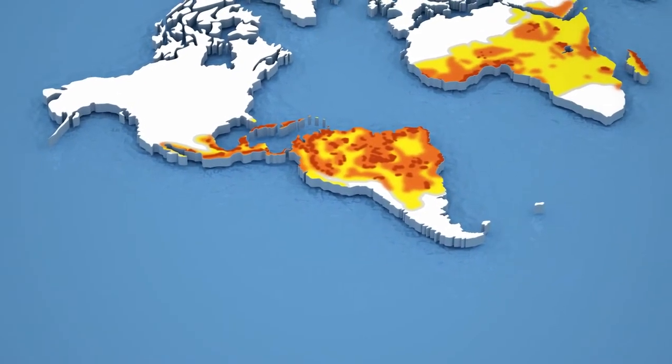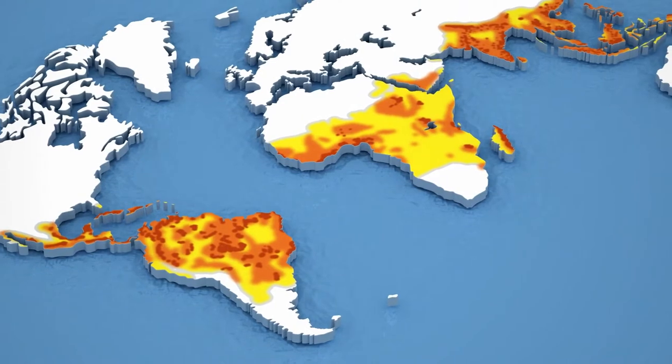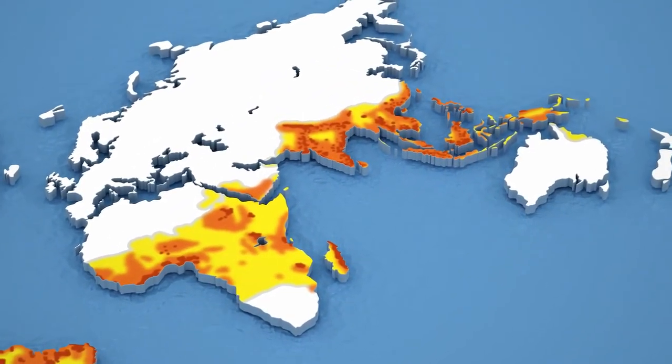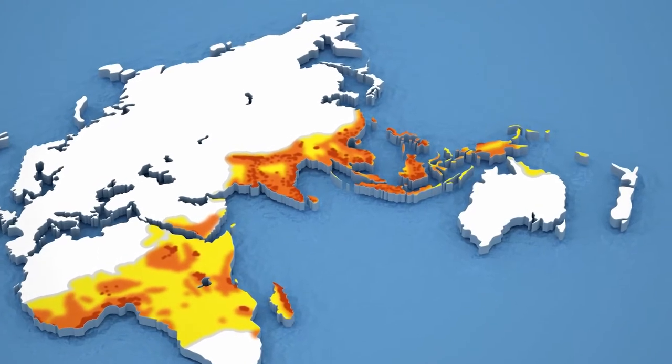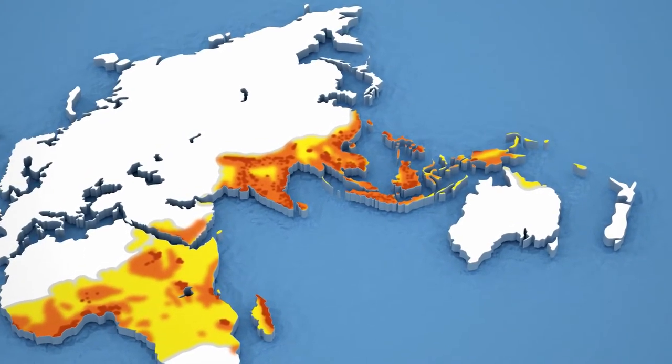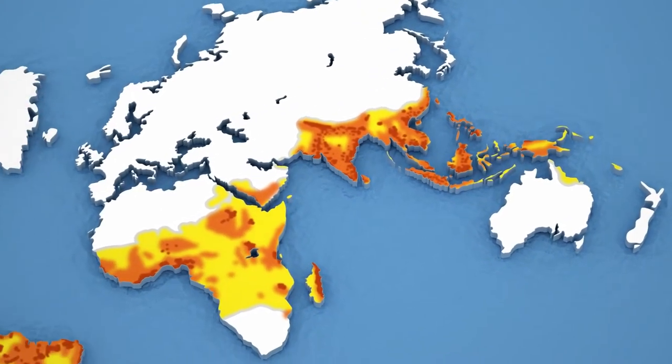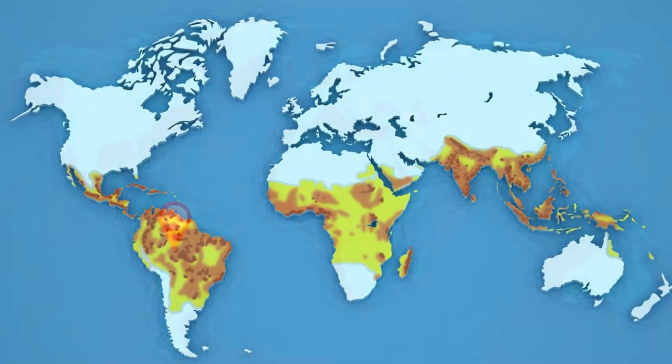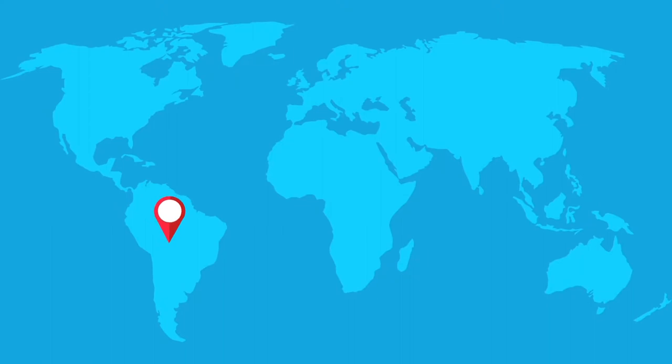Some continents run through both hemispheres, although all of Europe and North America are in the Northern Hemisphere. Also in the Northern Hemisphere is almost all of Asia, as well as the majority of Africa and approximately 10% of South America above the mouth of the Amazon River.